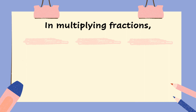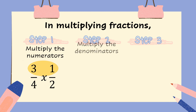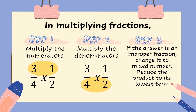Multiplying fractions are just like multiplying numbers. To multiply fractions, we have three steps to follow. Step number one, multiply the numerators. Step number two, multiply the denominators. And step number three, if the answer is an improper fraction, change it to a mixed number. And always reduce your answers to its lowest term.